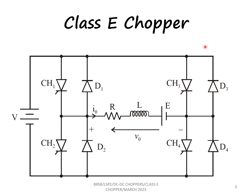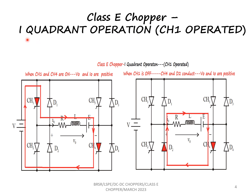Let us now see the operation of the class E chopper in the first quadrant. For first quadrant operation, CH1 is operated — it is kept on and then kept off. When CH1 is kept on, CH4 is also kept on, and the current flows through CH1, load, CH4, back to the source. The current is positive and voltage is also positive. When CH1 is kept off, the current flowing through CH4 takes the freewheeling path through diode D2, and the current flow remains in the same direction with voltage still positive. By switching CH1 on and off, we achieve first quadrant operation.